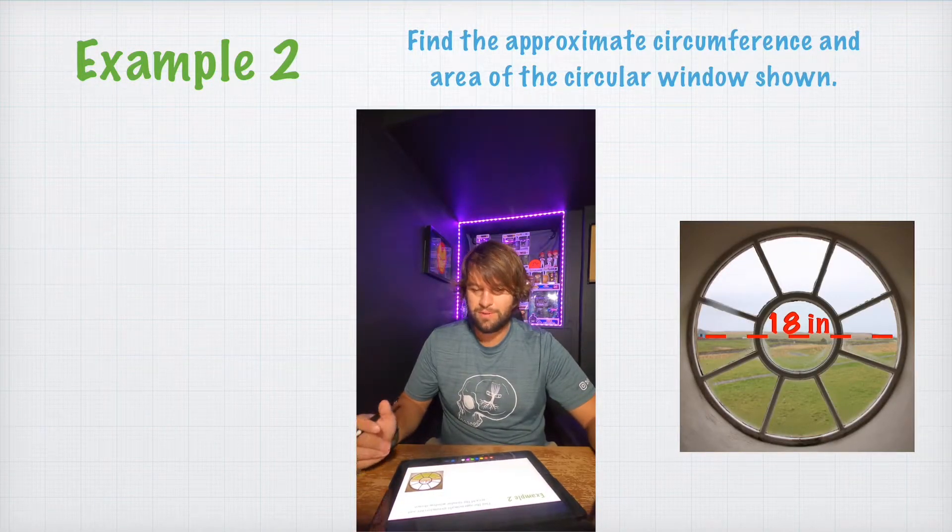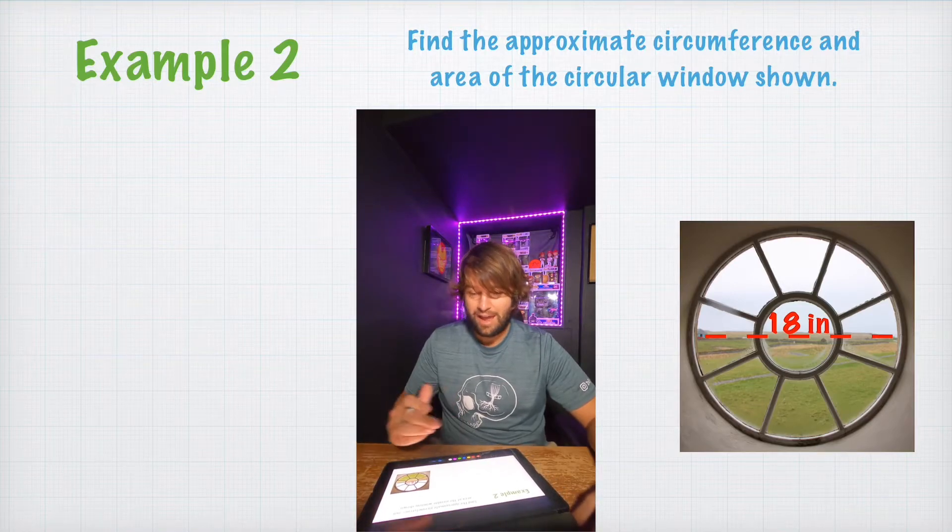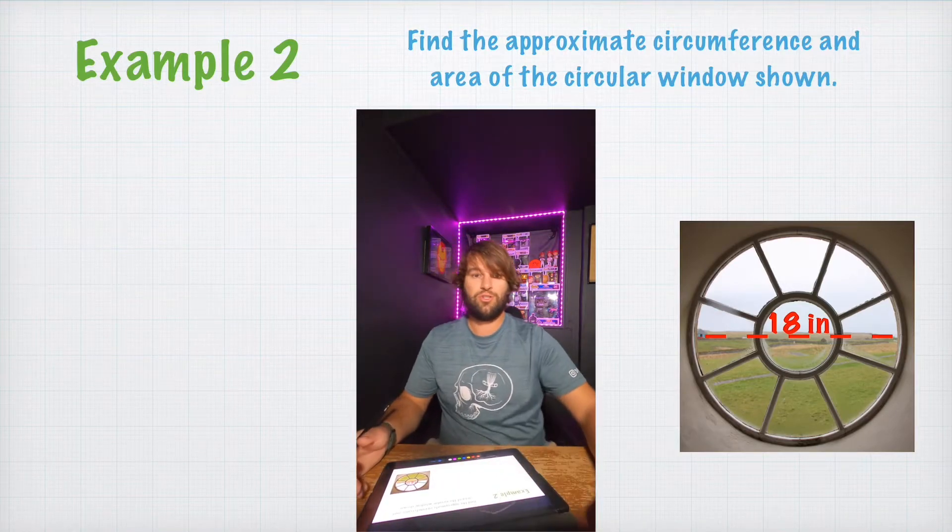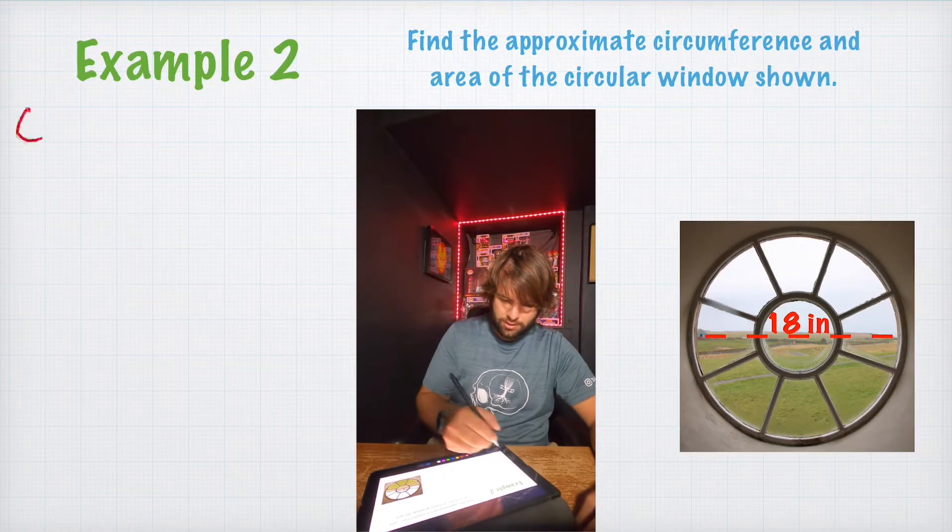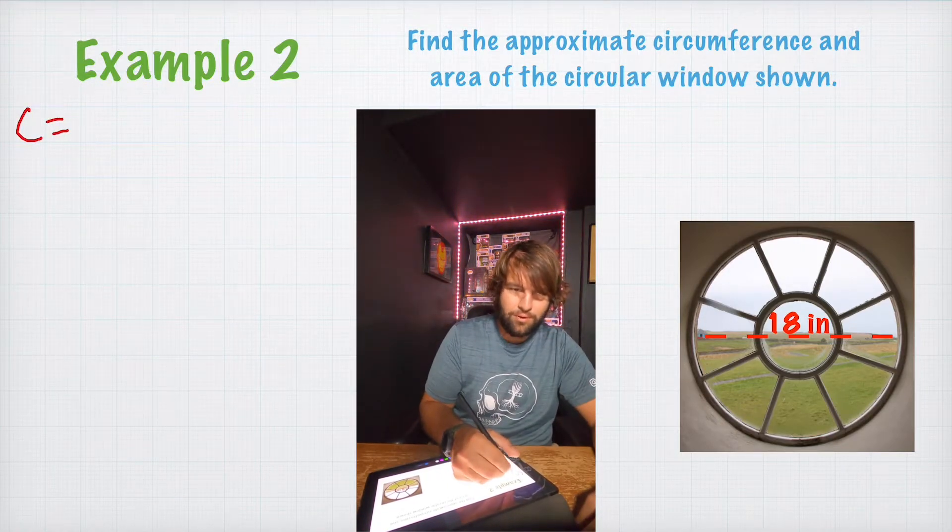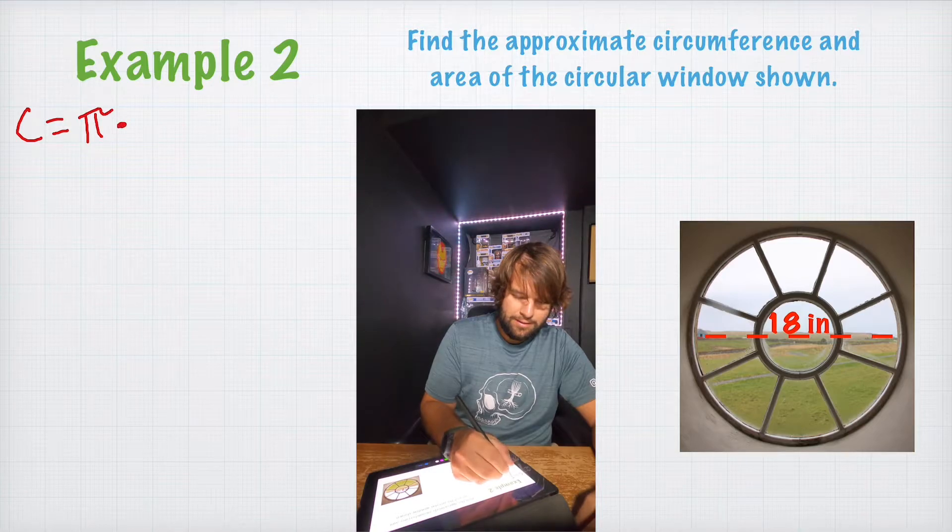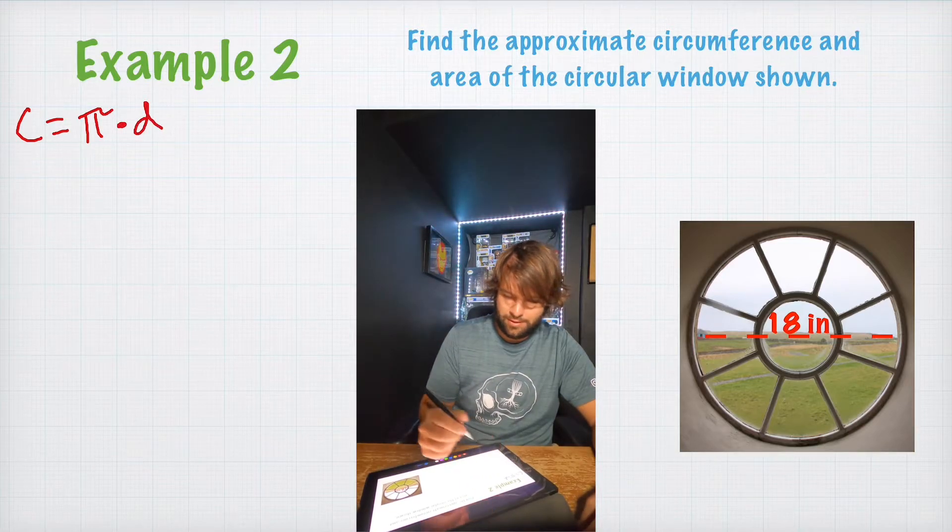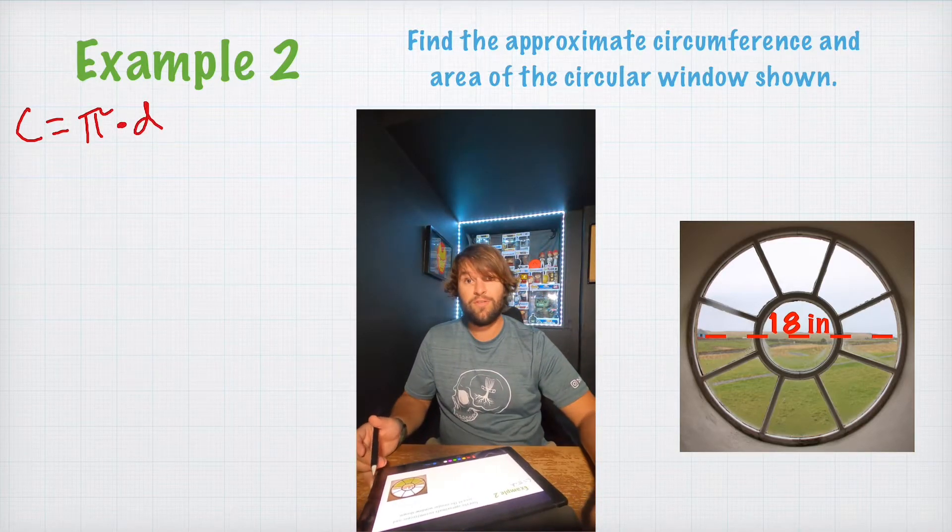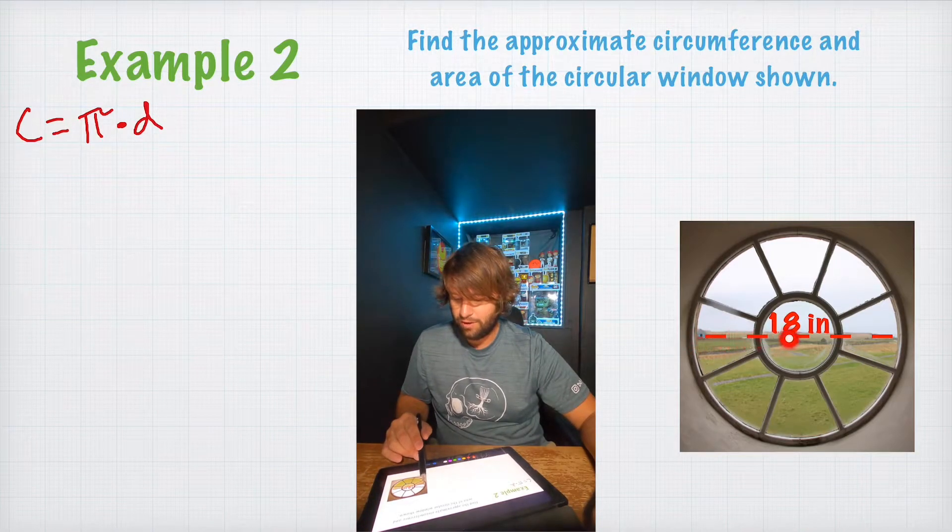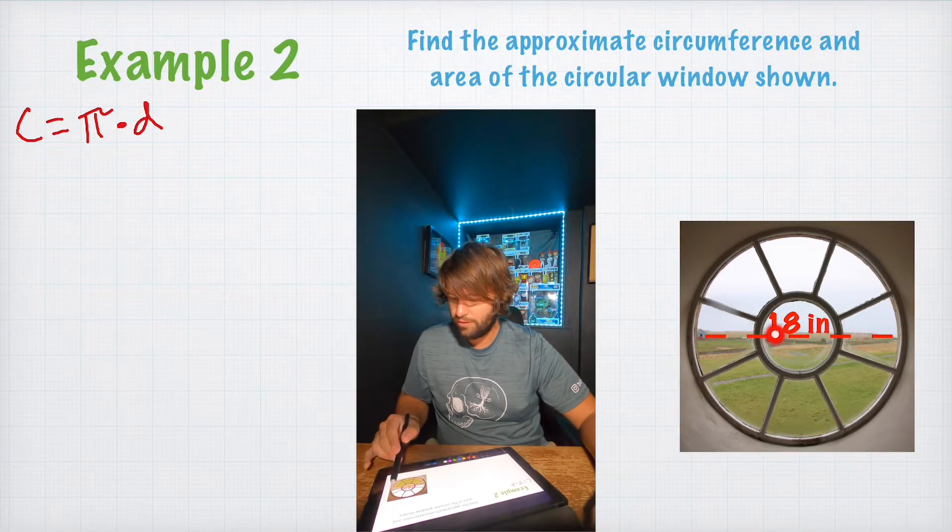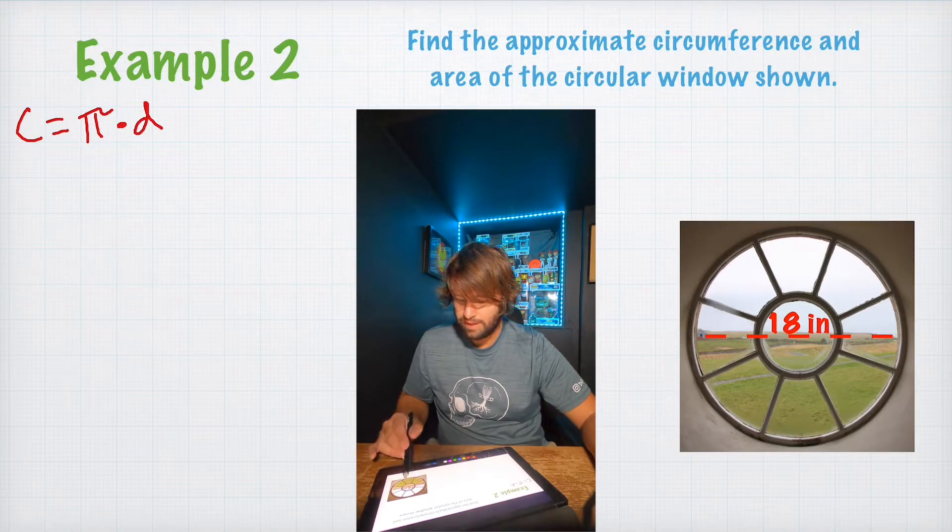So, now they want us to find the approximate circumference and area of the circular window shown. So, let's go ahead and start off with circumference. Circumference equals pi times diameter. So, the first thing we need to look at is see what is the diameter of our window. And the diameter of our window is clear across, which is 18.